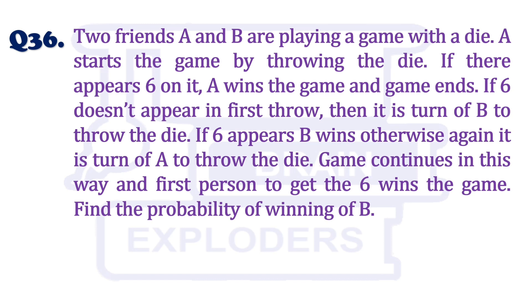If 6 appears, B wins, otherwise again it is turn of A to throw the die. Game continues in this way and first person to get the 6 wins the game. Find the probability of winning of B.